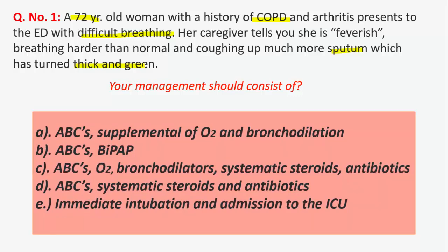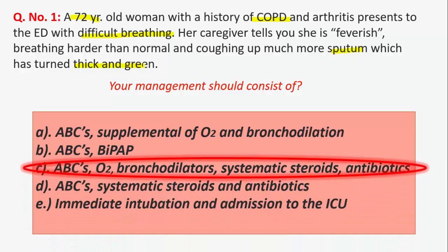In COPD, what we do: the events should be ABCs, oxygen, bronchodilators, systemic steroids, and antibiotics. In acute exacerbation of COPD, exacerbations can be triggered by a range of factors such as viral, bacterial, or other infections and environmental irritants. Exacerbations are indicated by an increase in coughing and sputum production from baseline.